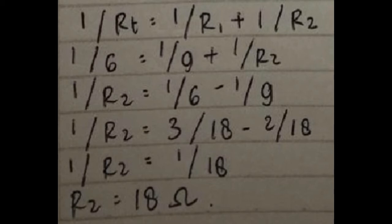Jawaban: 1 per RT sama dengan 1 per R1 plus 1 per R2, 1 per 6 sama dengan 1 per 9 plus 1 per R2, 1 per R2 sama dengan 1 per 6 minus 1 per 9, 1 per R2 sama dengan 3 per 18 minus 2 per 18, 1 per R2 sama dengan 1 per 18, R2 sama dengan 18 ohm.